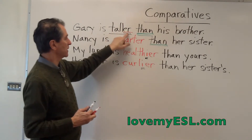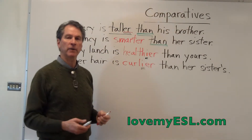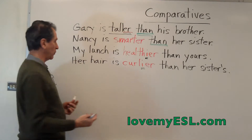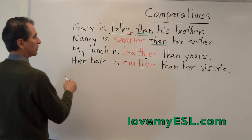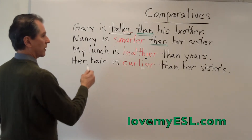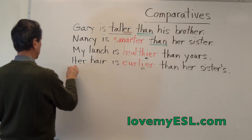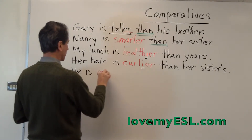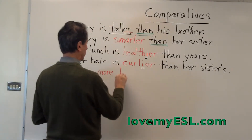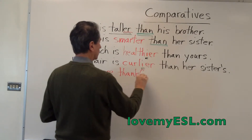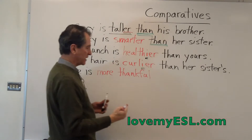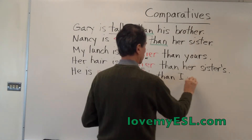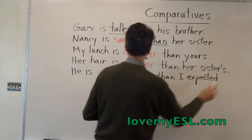Other than that, one-syllable adjectives take an -ER: taller, smarter — I'm sure you can think of many more. Now, for other two-syllable words — because healthy is actually a two-syllable word — let's look at some others. For example, 'more thankful.' He is more thankful. When you have two-syllable words, you put the word 'more' in front of it. You cannot say 'thankful-er' — it's just not said in English. More thankful than I expected. He is more thankful than I expected.